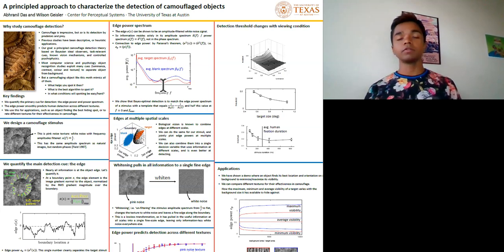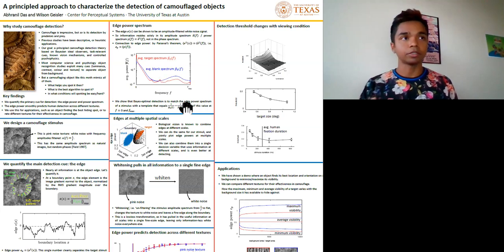This means that given a stimulus, you take the dot product of its edge power spectrum with this template and set a criterion on it to decide if there is a target.